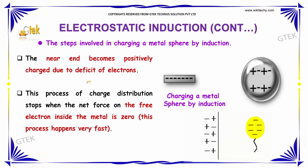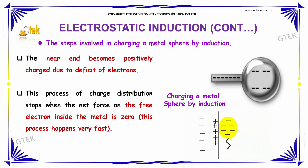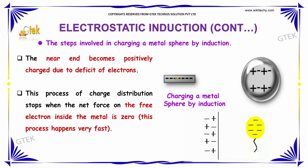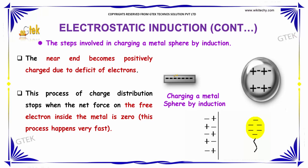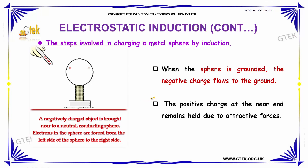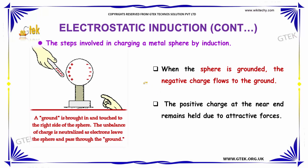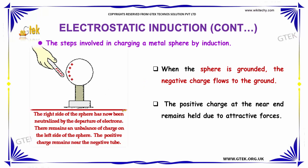The next step is that the near end becomes positively charged due to a deficiency of electrons. This process of charge distribution stops when the net force on the free electrons inside the metal is zero. Generally, this process happens very fast. When the sphere is grounded, the negative charge flows to the ground, and the positive charge at the near end remains held due to attractive forces.